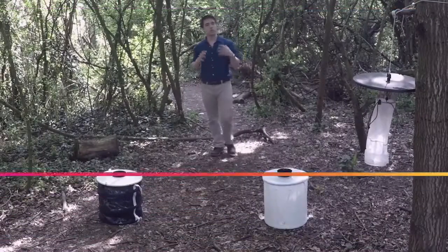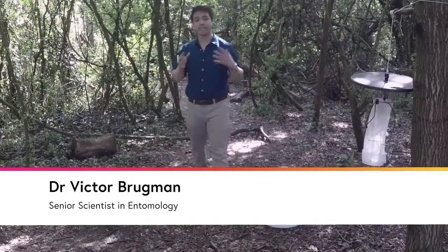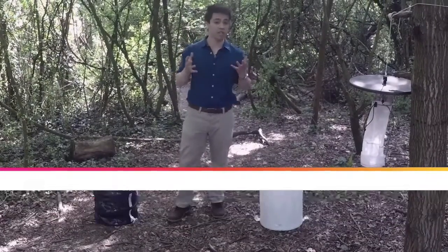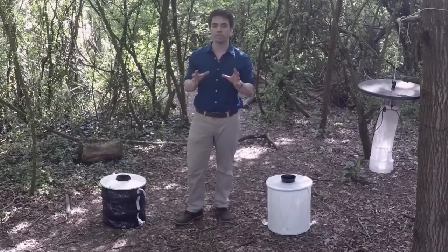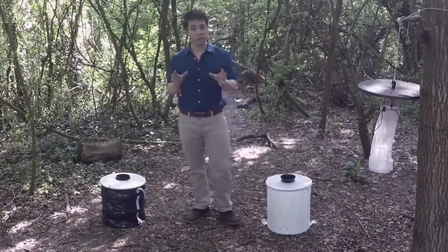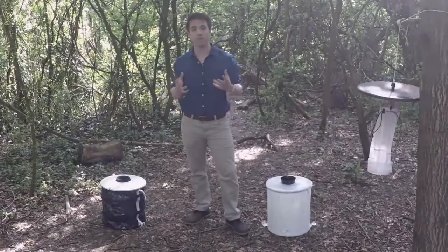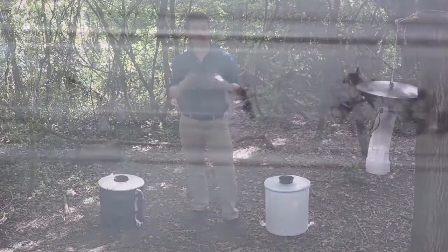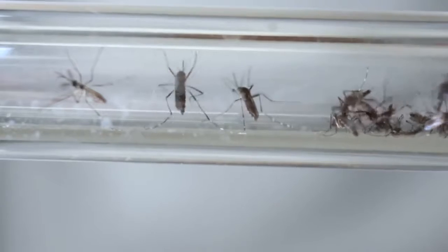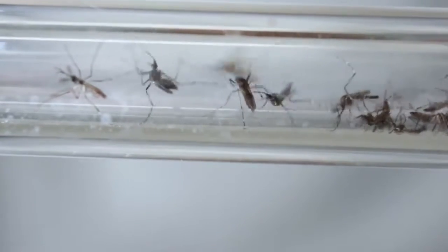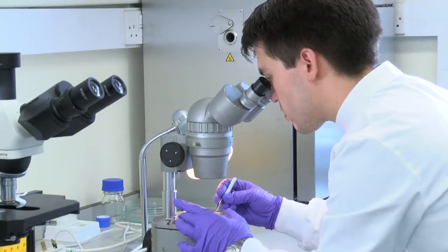Up to now we've discussed why we need to trap mosquitoes, both in areas where Zika and other viruses are currently found, but also in areas where there is a risk that they might arise. The purpose of this step therefore is to provide an overview of adult mosquito trapping methods. Once we have trapped the mosquitoes we can then bring them back to the lab where we can identify them under the microscope and if necessary test them for the presence of viruses such as Zika.